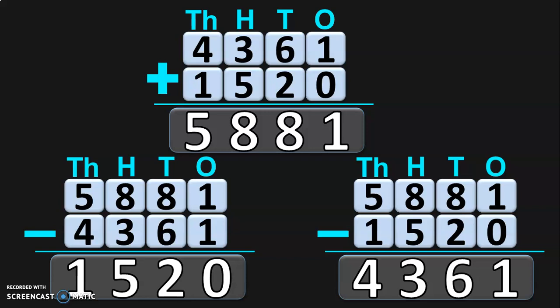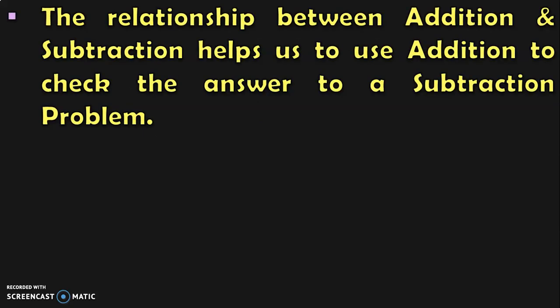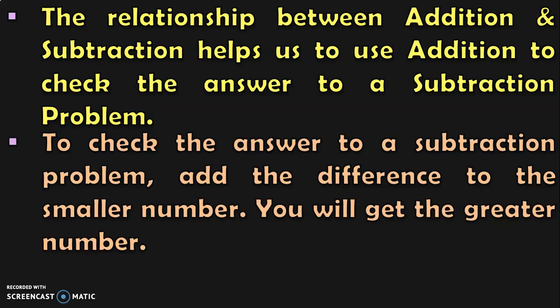Hope you understood the relationship between addition and subtraction. Now we are going to do checking subtraction by addition. The relationship between addition and subtraction helps us to use addition to check the answer to a subtraction problem. To check the answer, add the difference to the smaller number and you will get the greater number. Let us see this with the help of a simple example.